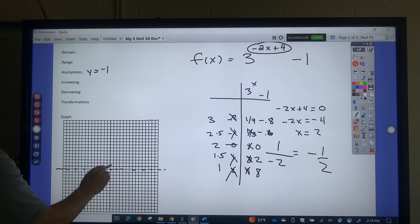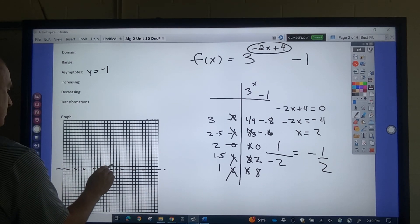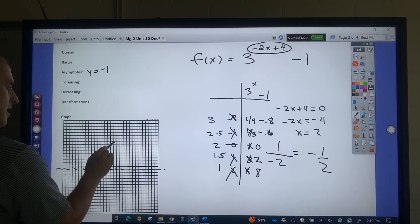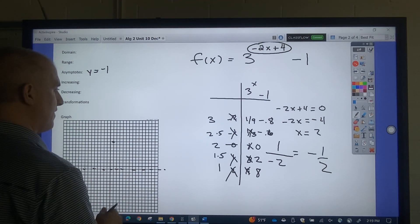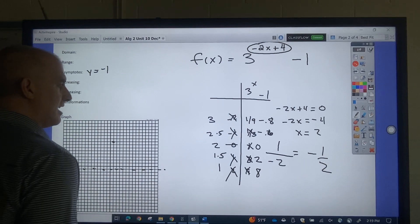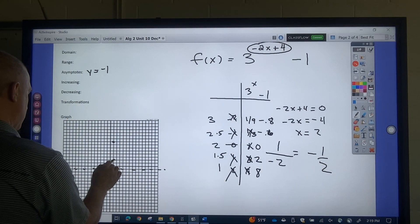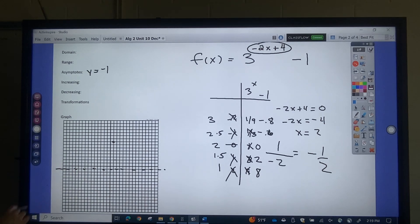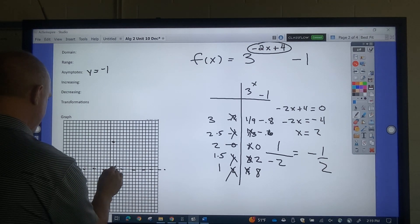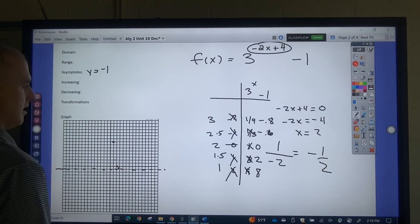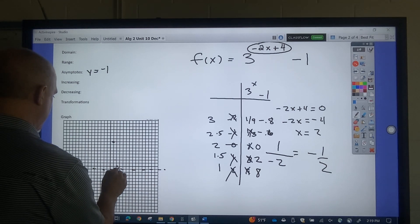So at 1 over, I'm at 8 up. 3, 4, 5, 6, 7, 8. At 1.5 over, I'm at 2 up. At 2 over, I'm at 0 up. At 2.5, I'm at negative 0.6. And at 3, I'm at negative 0.8.